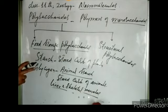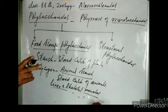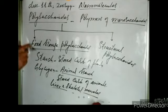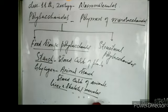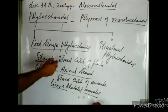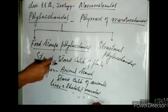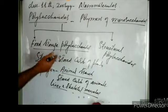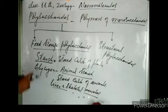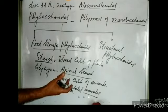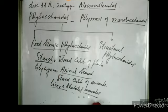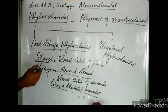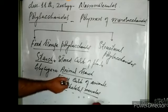Food storage polysaccharides serve as reserve food in plants and animals. In plants, starch serves as reserve food — when plants store their carbohydrates, they store them as starch. Glycogen is the stored carbohydrate of animals; when animals store their carbohydrates, they store them as glycogen — that is why glycogen is called animal starch. Glycogen is stored in the liver and skeletal muscles.